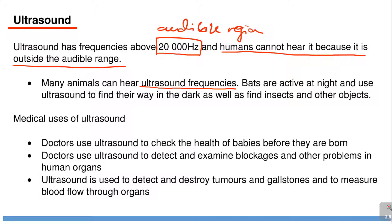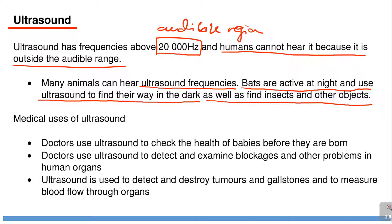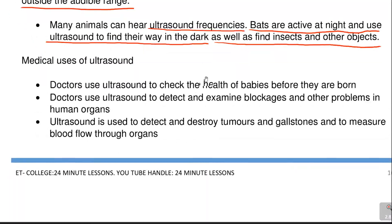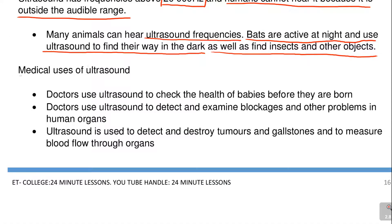Many animals can hear ultrasound frequencies. For example, bats are active at night and use ultrasound to find their way in the dark as well as to find insects and other objects. It is important to read about how animals use ultrasound to detect their path, find food, and identify dangers like walls — they find their way through ultrasound.